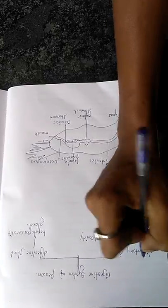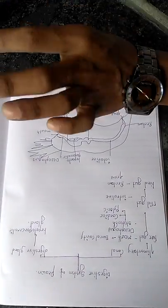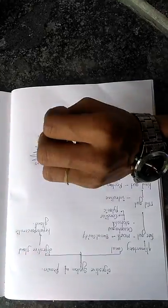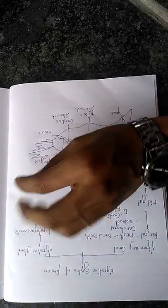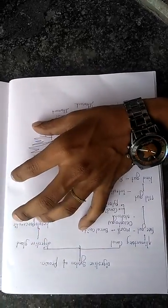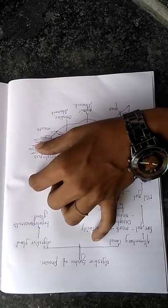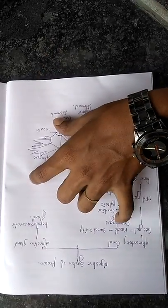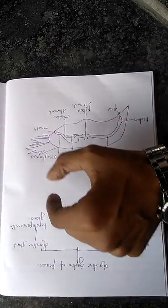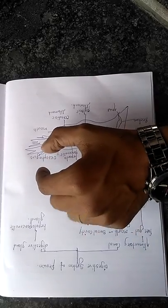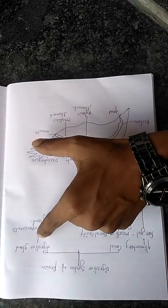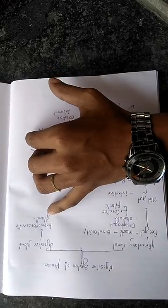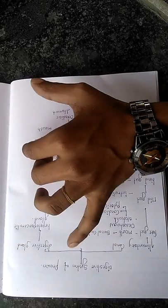Generally, in animals such as cockroach and prawn, the digestive system consists of alimentary canal and digestive gland. The alimentary canal is a long, straight, narrow and muscular tube. The digestive gland consists of the hepatopancreas gland.